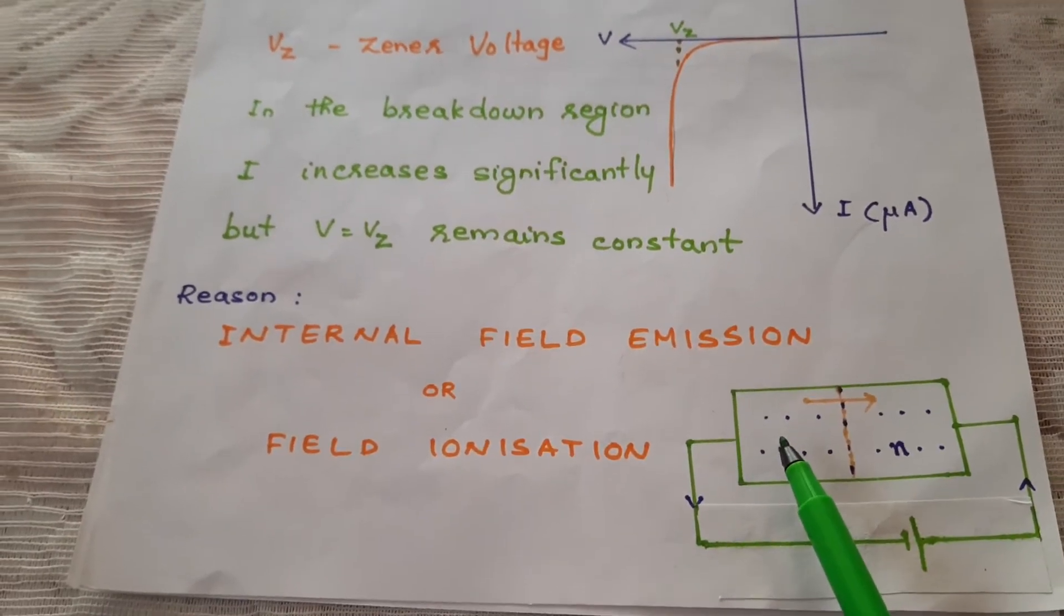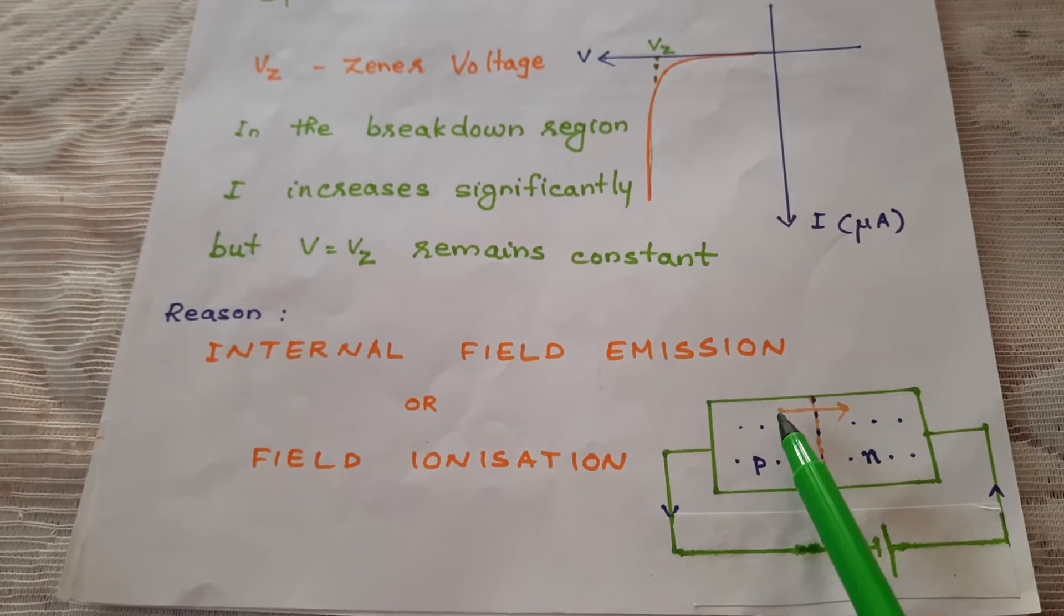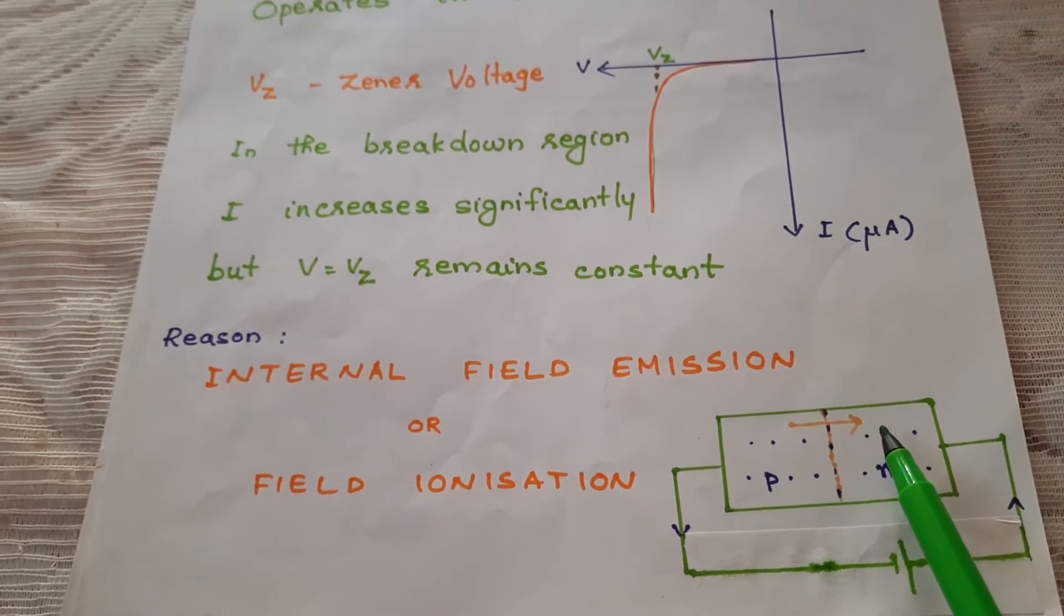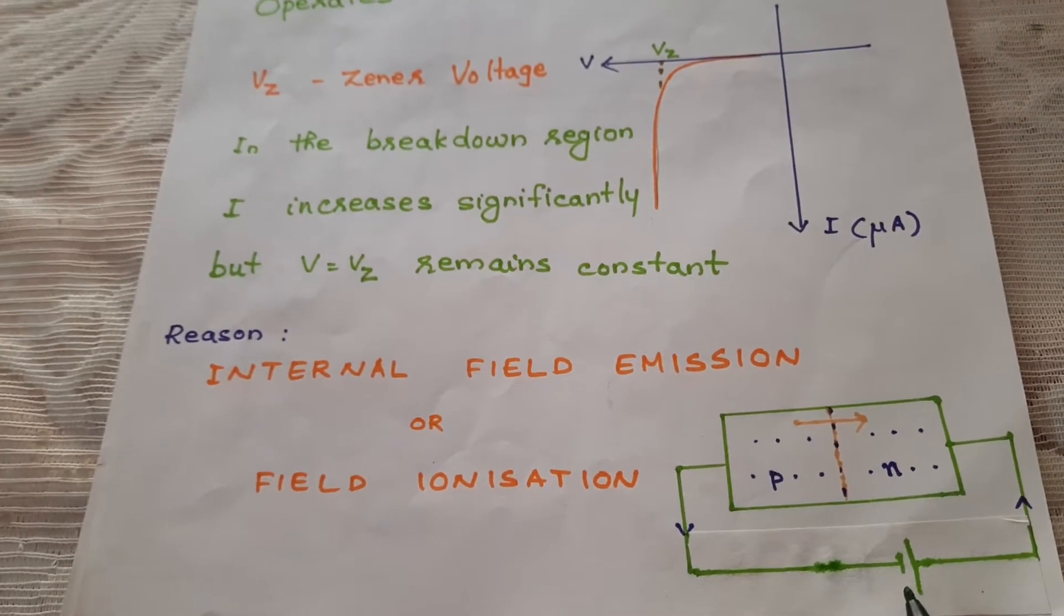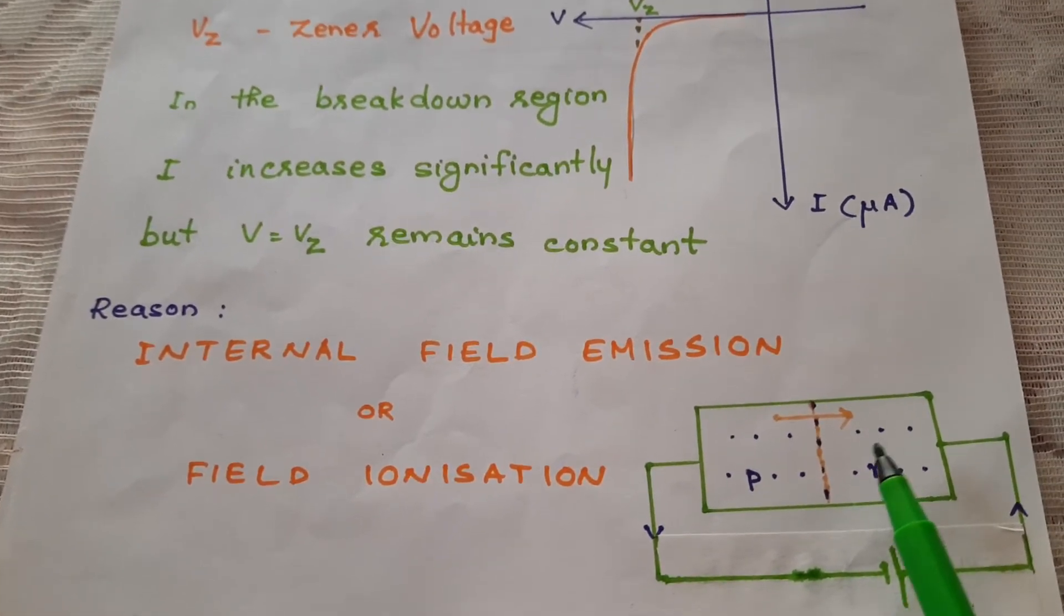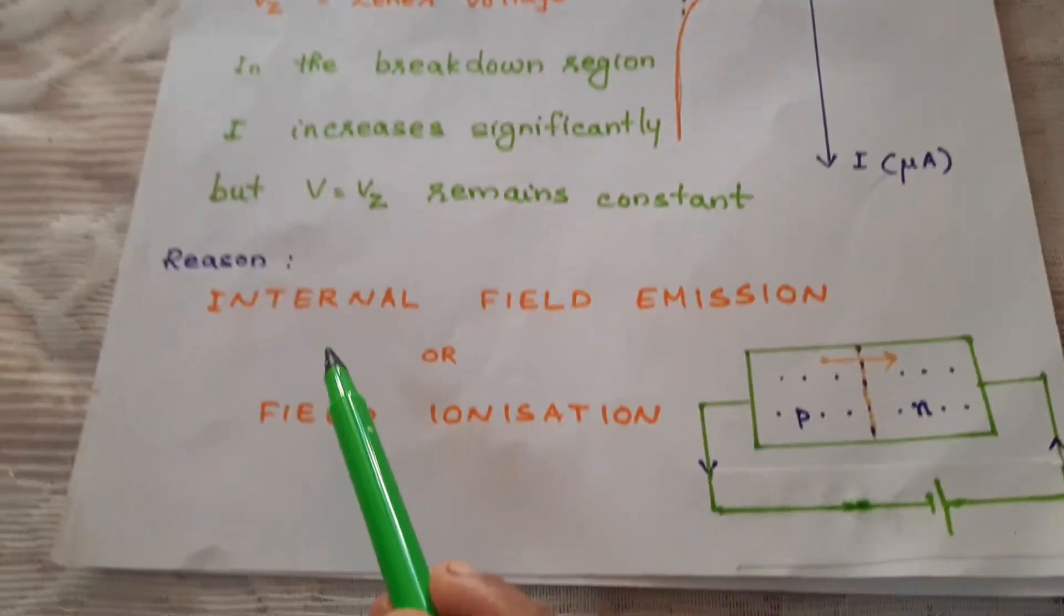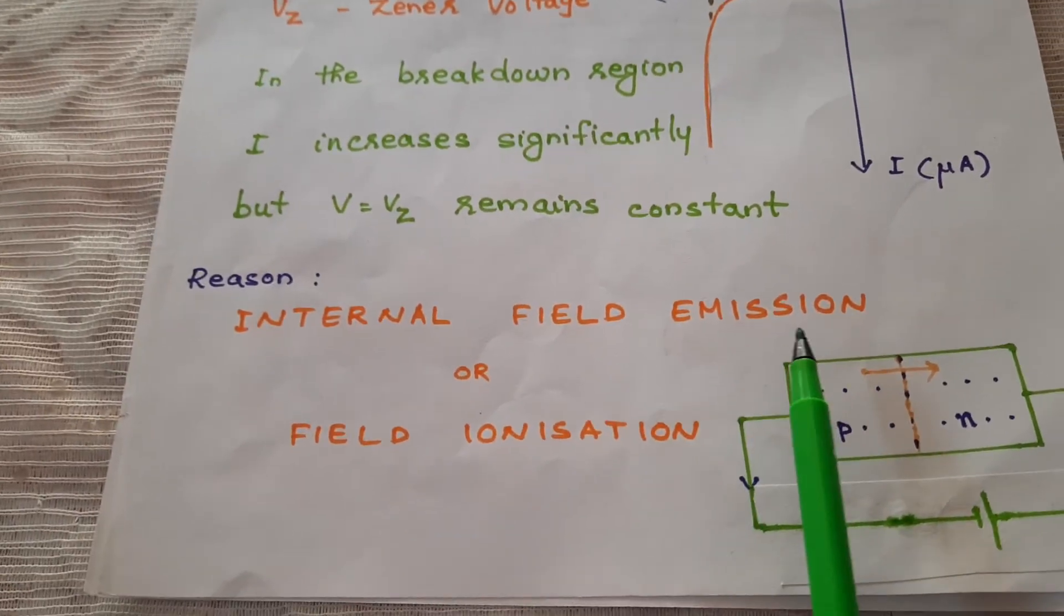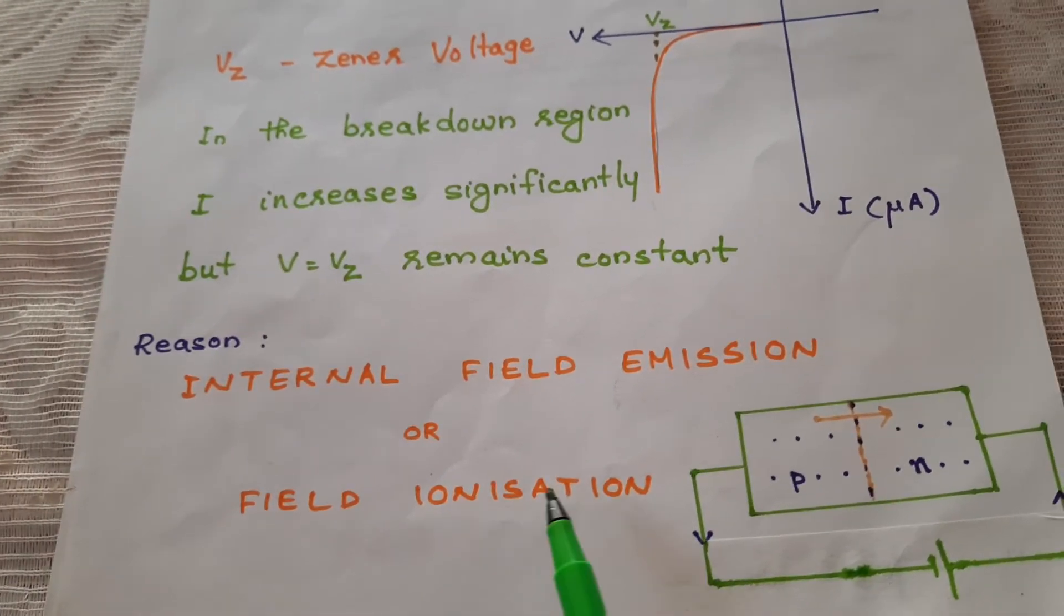And the electrons generated on the P side are accelerated to N side due to the reverse bias. And thus the current increases significantly. This process is known as internal field emission or field ionization.